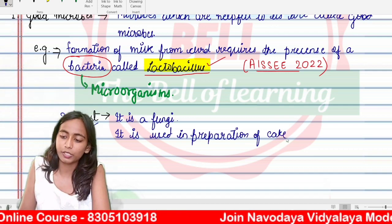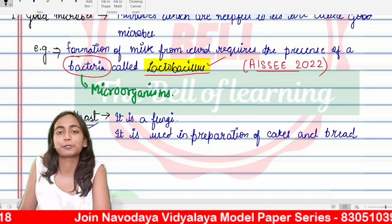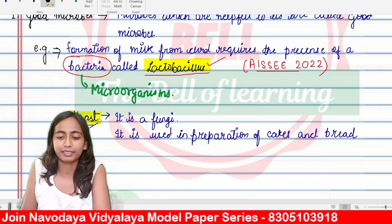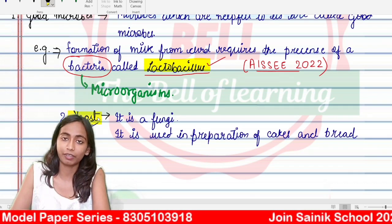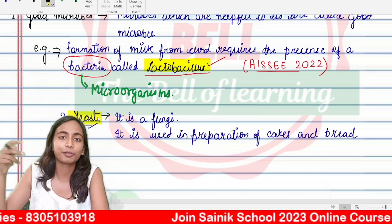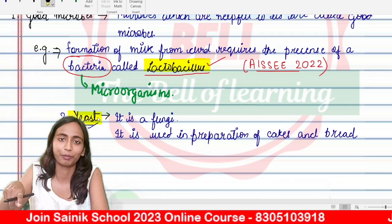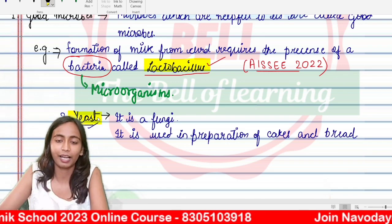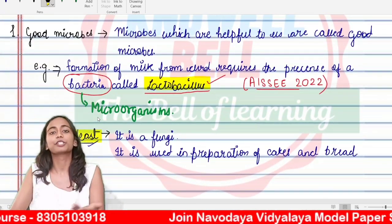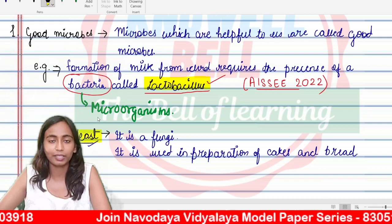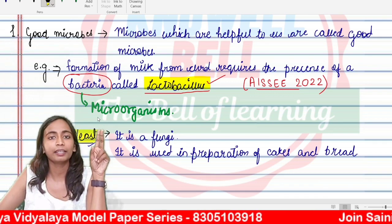Last year the question was for Lactobacillus; this year the question can be for Yeast. So we need to get prepared for both of them — both microorganisms are very important. The notes for whatever I am writing are available in the description box of this video, and from the Telegram channel of Novelvel as well. So, good microorganisms which are helpful to us: example — Lactobacillus for curd formation, and Yeast, a fungi, for bread and cake formation.